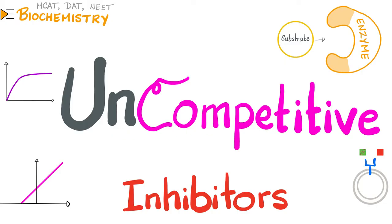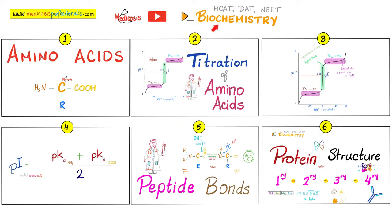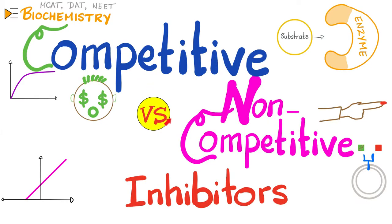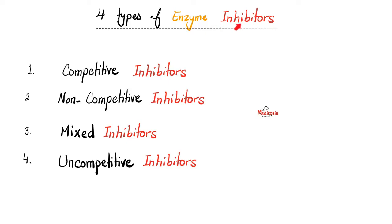Do they bind to the active site or to the allosteric site of the enzyme? The answer is to the allosteric site. Please watch the videos in this playlist in order, especially the video on competitive and non-competitive inhibitors. We have four types of enzyme inhibitors: competitive, non-competitive, mixed, and uncompetitive.